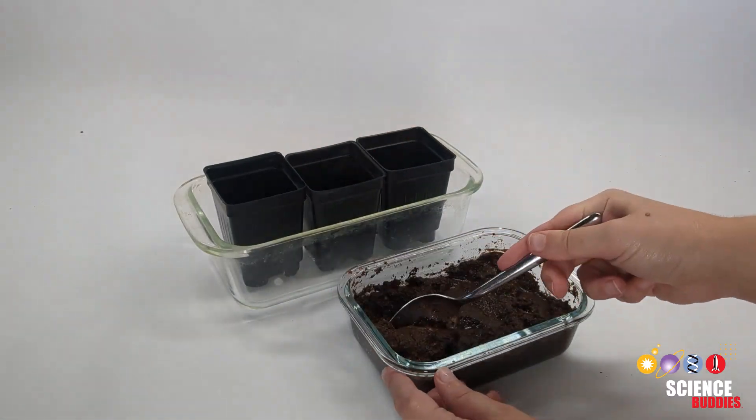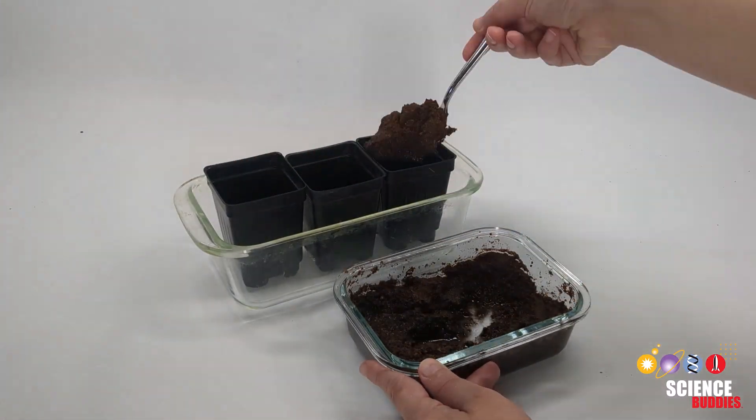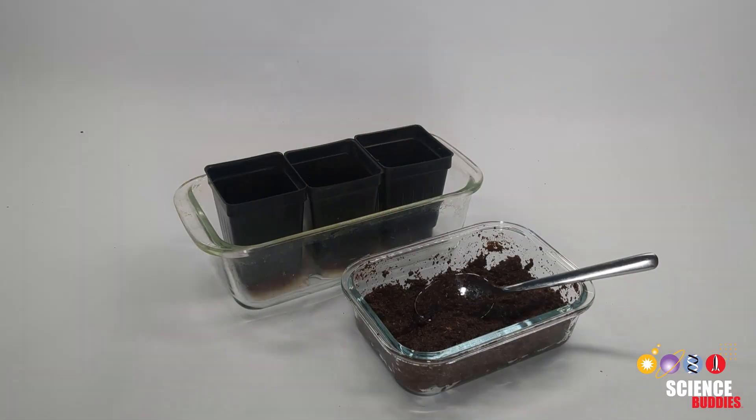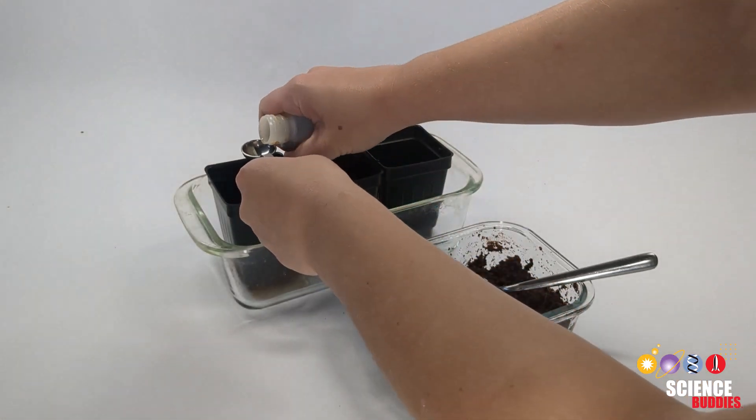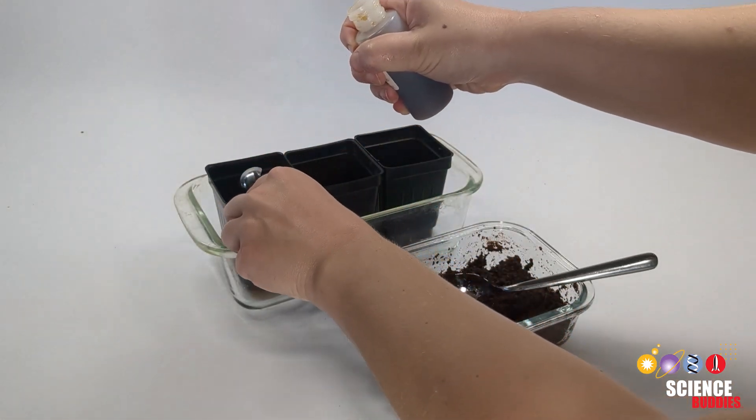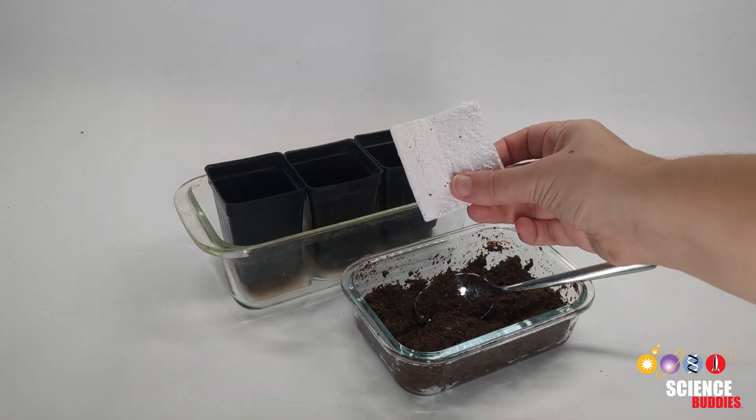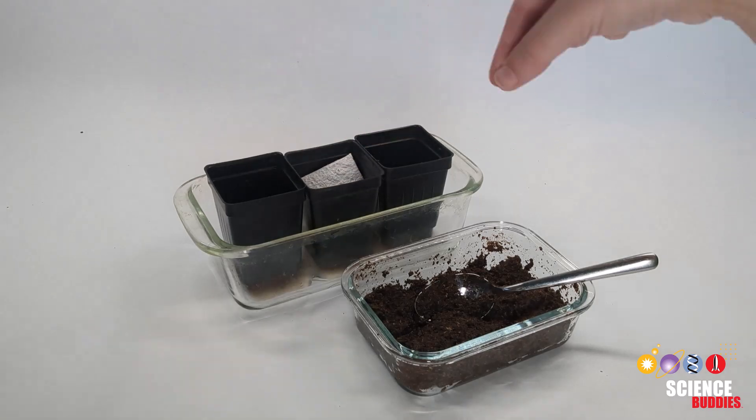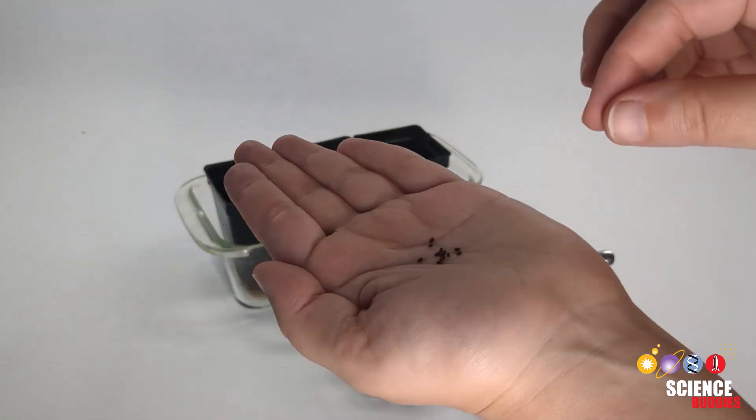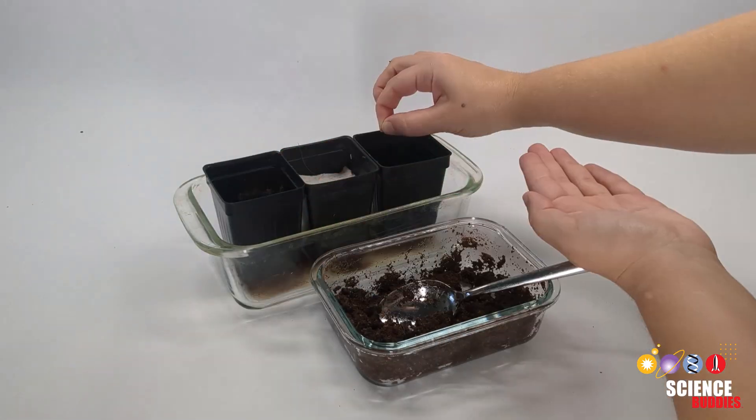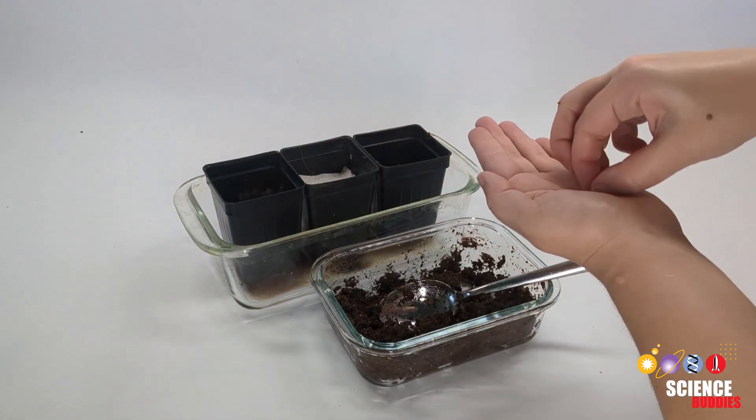The coconut husk alone will act as your negative control. Your experimental group will be the seed paper. Count out and add the same number of seeds to your positive and negative control containers as your experimental group with the seed paper.